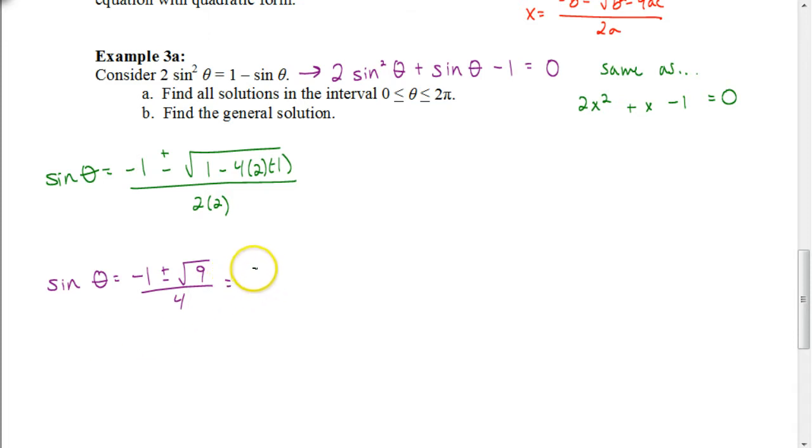Now the square root of 9 is 3, so we get negative 1 plus or minus 3 divided by 4. So here's what we have. We have the sine of theta equals, if I take negative 1 plus 3, I get 2. And 2 4s reduces to 1 half.